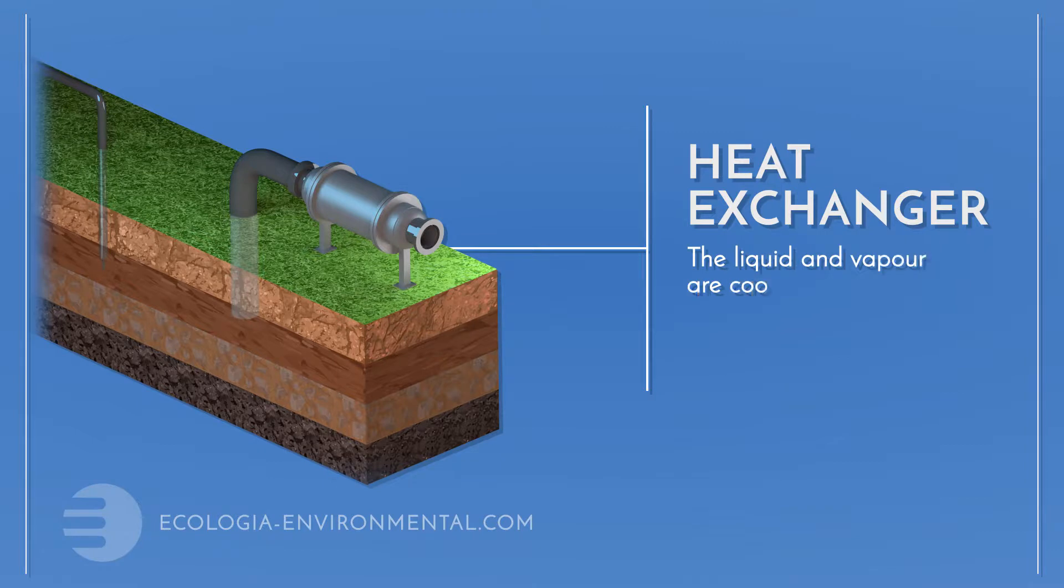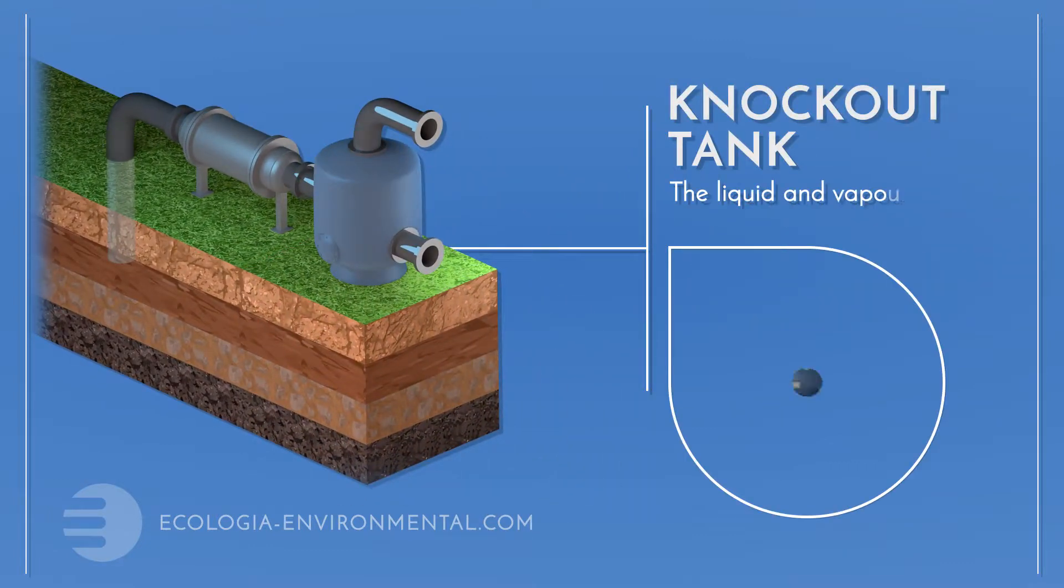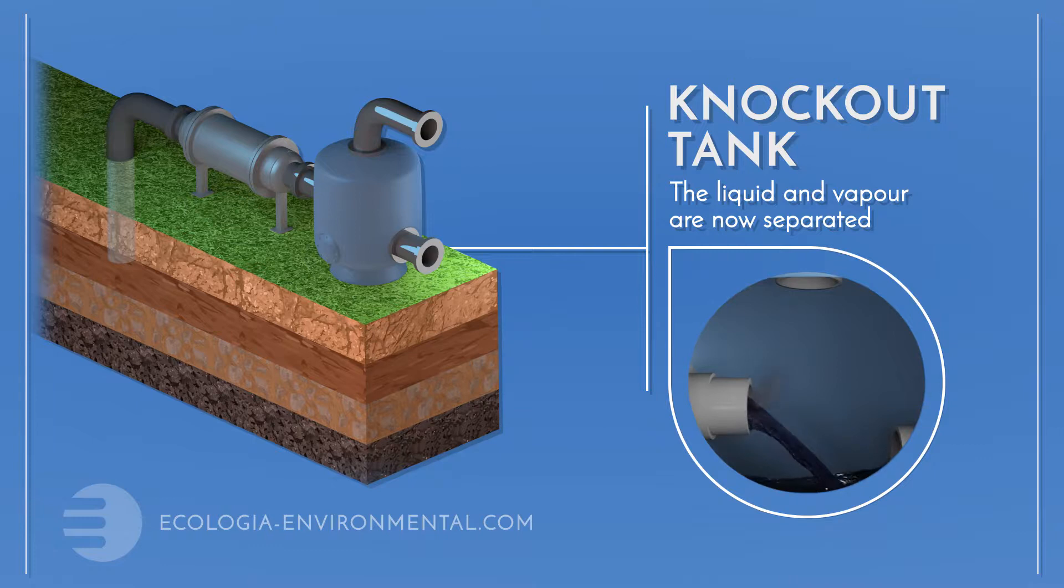The extracted liquid and vapor are cooled. Some of the vapor will condense to a liquid at this stage. Then we remove any liquid from the extracted vapor.